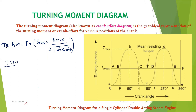In this torque we can consider the inertia of the connecting rod as discussed in the last class, but in most cases the inertia of the connecting rod is neglected. The plot between the turning moment due to piston effort only is considered. Theta, the angle turned by the crank, is represented on the x-axis and the turning moment is represented on the y-axis.